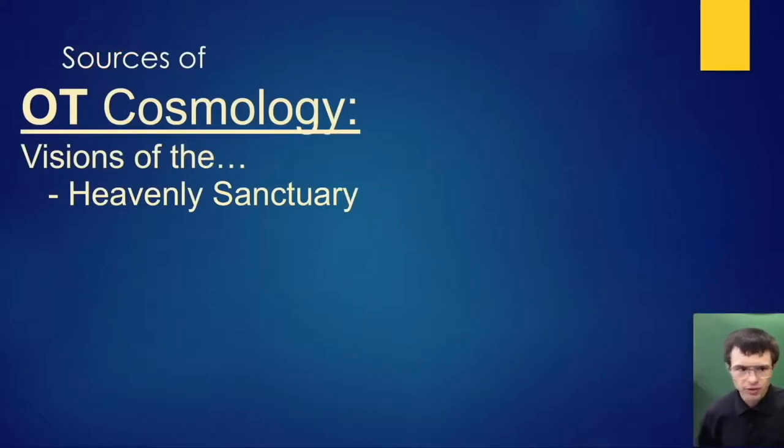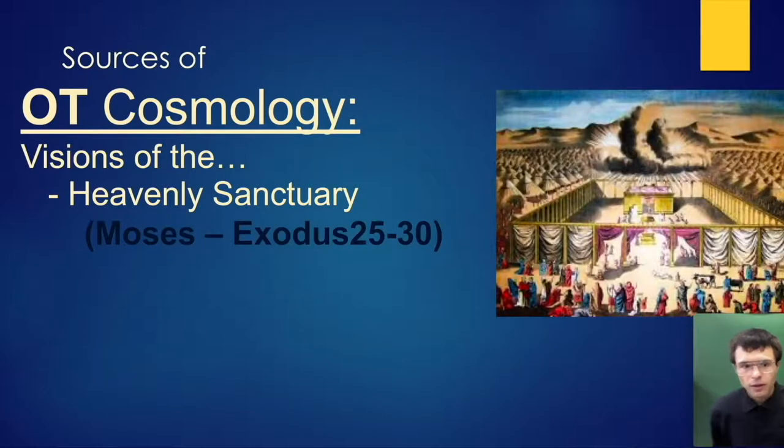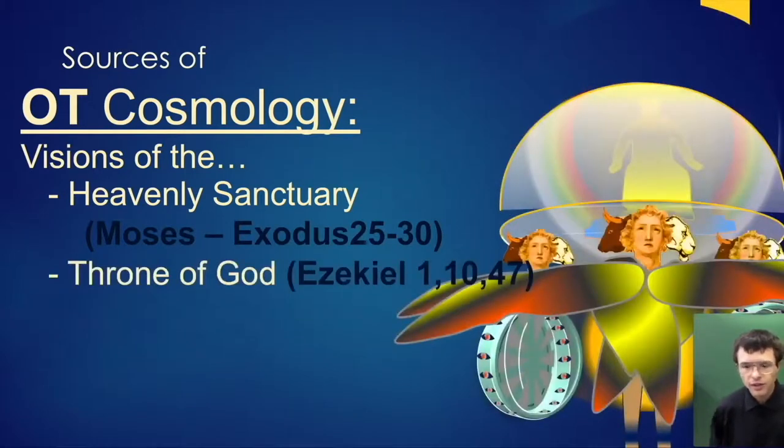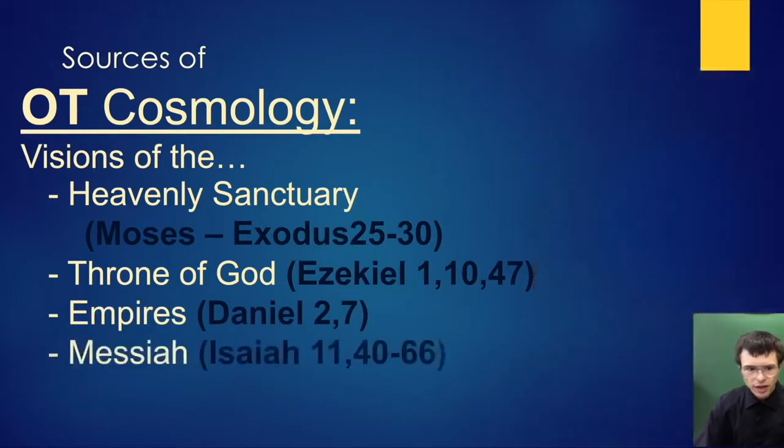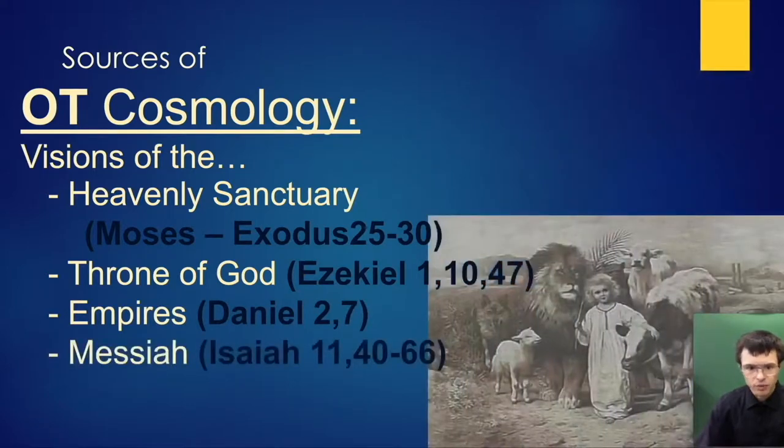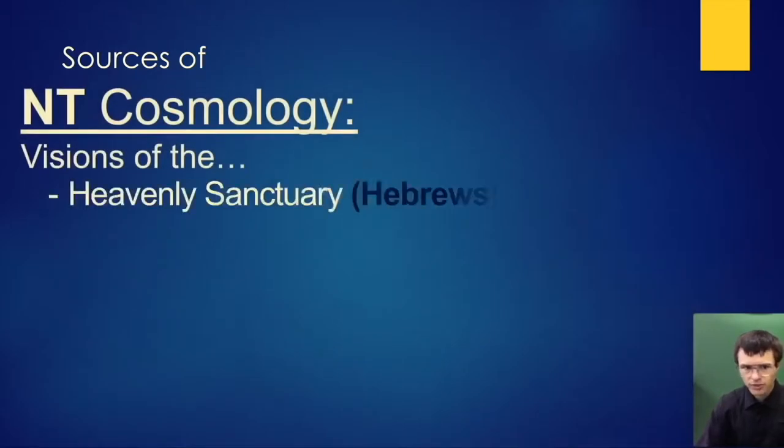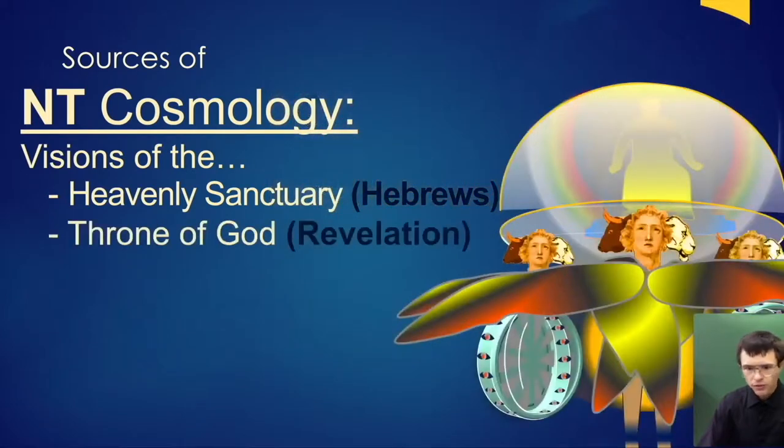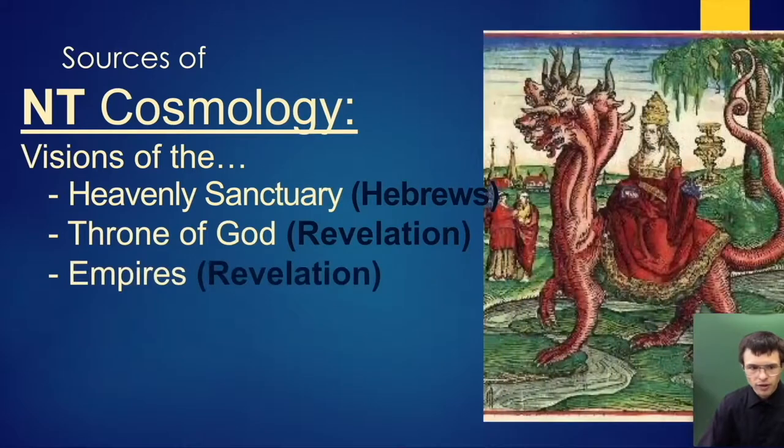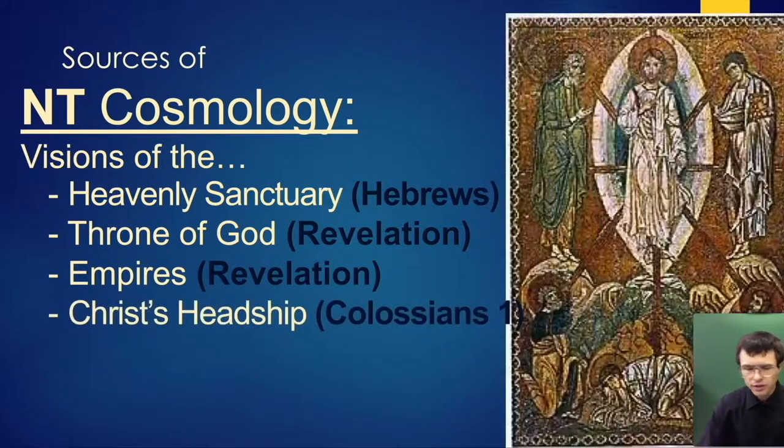The sources of where this comes from: First, Old Testament cosmology, especially visions of the heavenly sanctuary by Moses, the throne of God in Ezekiel carried about on top of the cherubim, the empires in Daniel, and the Messiah motifs in Isaiah. A lot of the constellations here also come from New Testament cosmology, descriptions of the heavenly sanctuary in Hebrews, the throne of God in Revelation chapter 4, empires in Revelation chapters 11 to 13, and Christ's headship in Colossians 1. These are just the major sources.